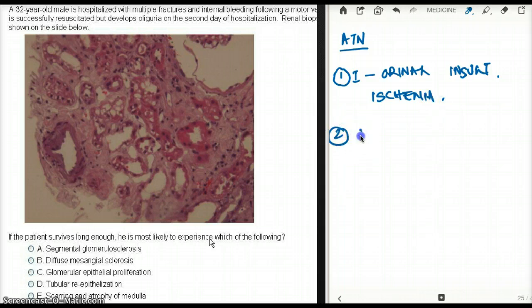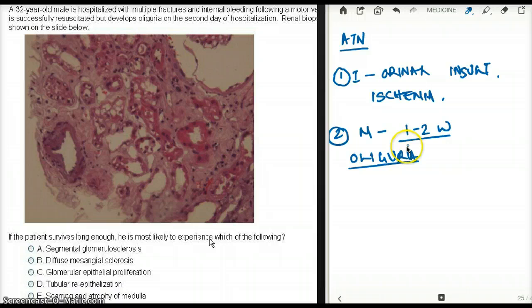And then we have the maintenance phase. The maintenance phase usually lasts one to two weeks. This is the phase where we are going to see oliguria. And this oliguria is going to be maintained for one to two weeks. And that's why it's called the maintenance phase because there's oliguria and it remains in its oliguric phase.